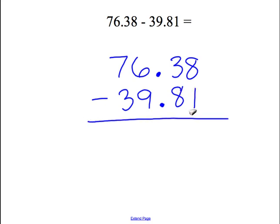To start this problem out we are going to subtract 1 from 8. So 8 minus 1 is 7. Then we are going to move to the left where we try and subtract 8 from 3. We cannot do that so we need to borrow from the 6 which is next to the 3. The 6 then turns into a 5 and the 3 will turn into a 13. 13 minus 8 we will get 5.